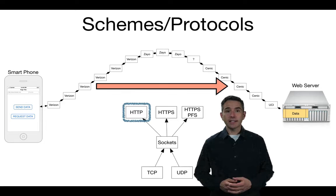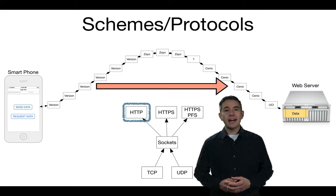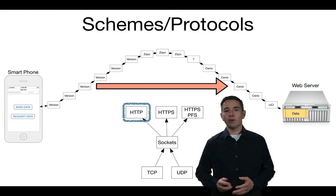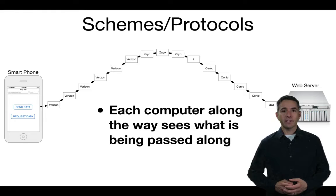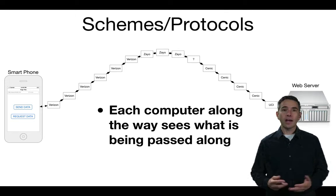In HTTP, your data is visible all along the path from your computer to the web server. If someone was interested in looking at the contents of your web traffic, they could work with any one of those computers along the way — including ones with a question mark whose ownership you're unsure of — and record any information in a packet being sent from a phone to a server. That's one of the weaknesses of the HTTP protocol.